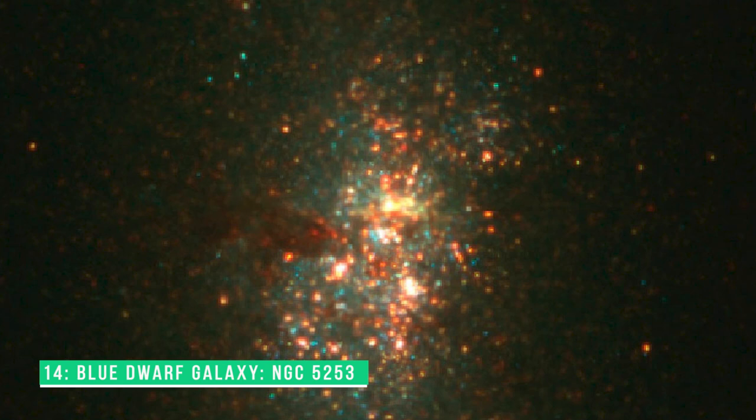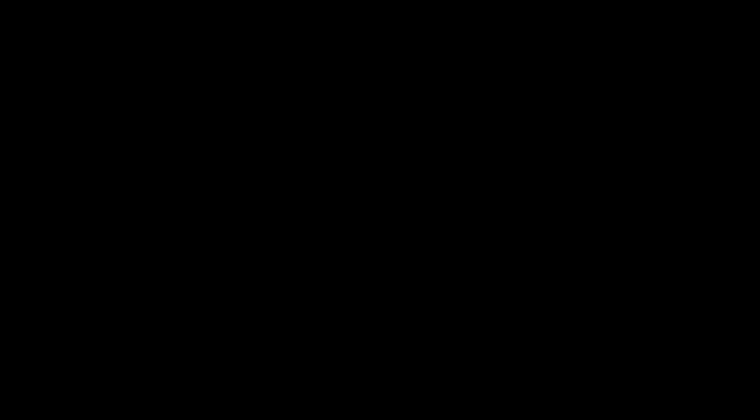Blue Dwarf Galaxy NGC5253. Located in Centaurus, NGC5253 is one of the closest known Blue Compact Dwarf galaxies, with a distance of around 12 million light-years. For the most part, they are characterized by extremely active star formation areas.